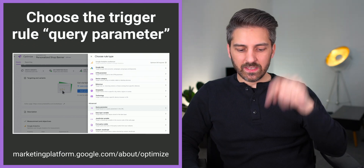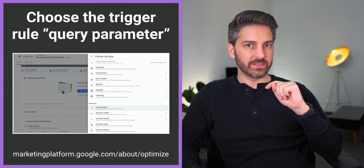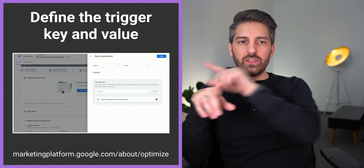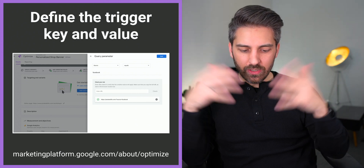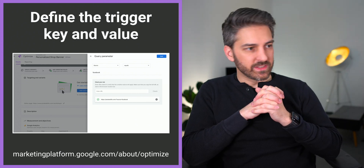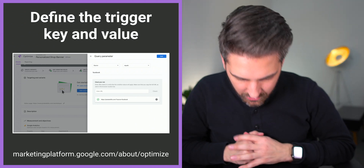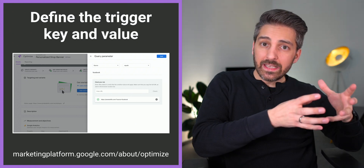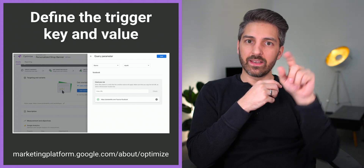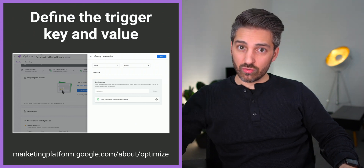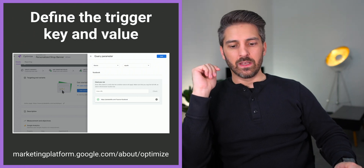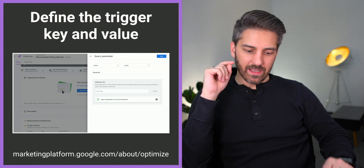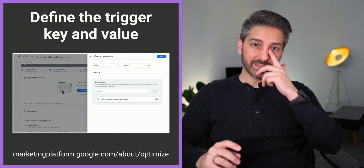But if you only want to show it to people from a specific source, there are many ways to get there. One of the simplest is to use query parameters — that is the option marked here. A query parameter is essentially what is written after the URL. It starts with a question mark, and we created a query parameter called 'source'. You can see it in the preview URL: pirateskills.com?source=Facebook. We define a key and a value — the key is 'source' and the value, which is the trigger, is in this case 'Facebook'. You can create all kinds of values: Instagram, Facebook Stories, Instagram Stories, and trigger different banners based on that.